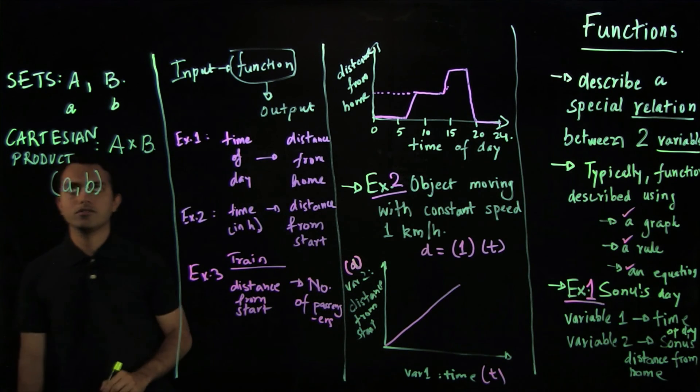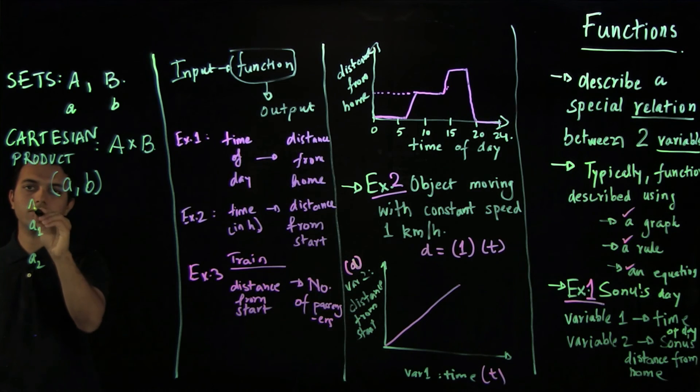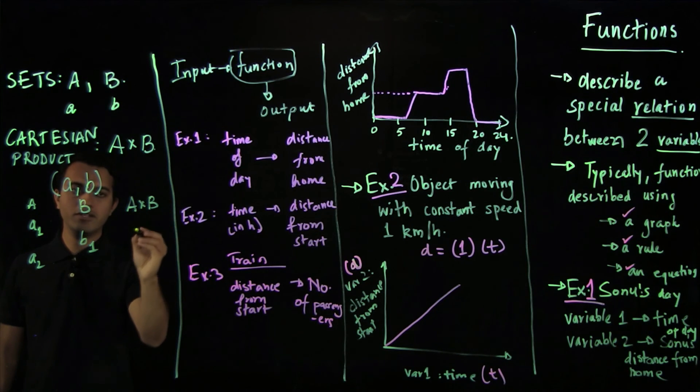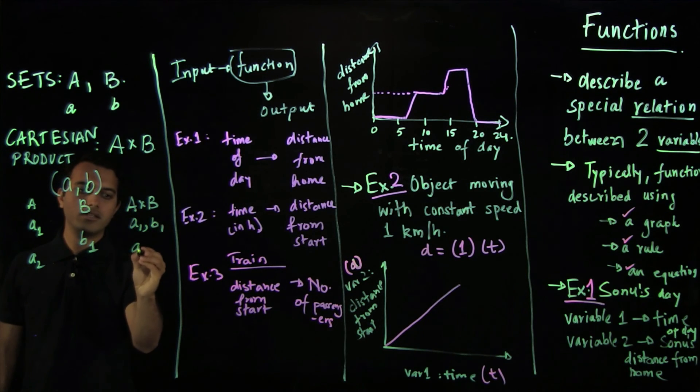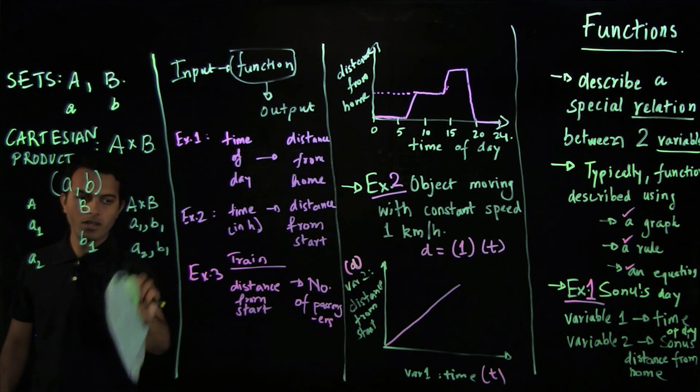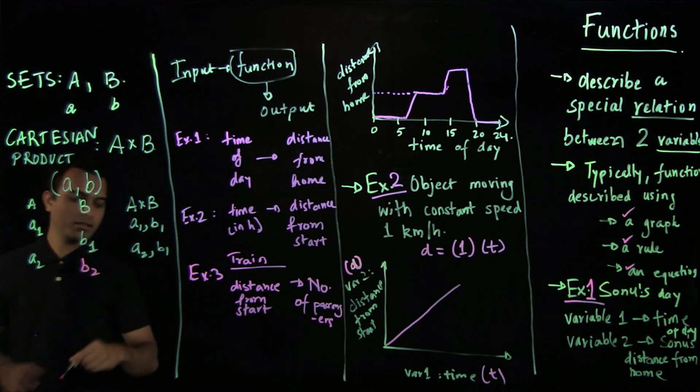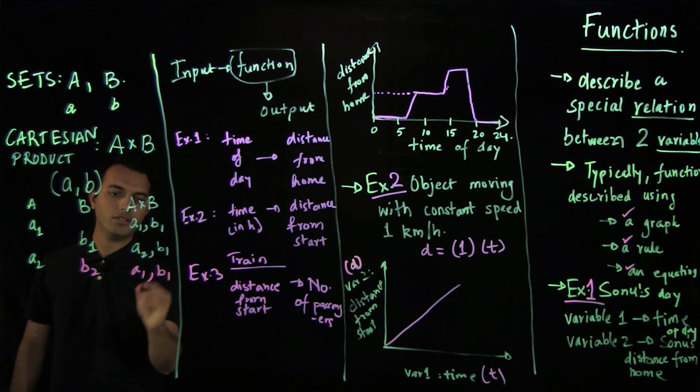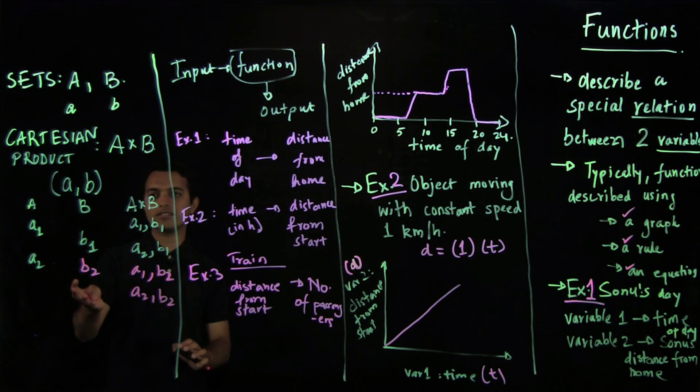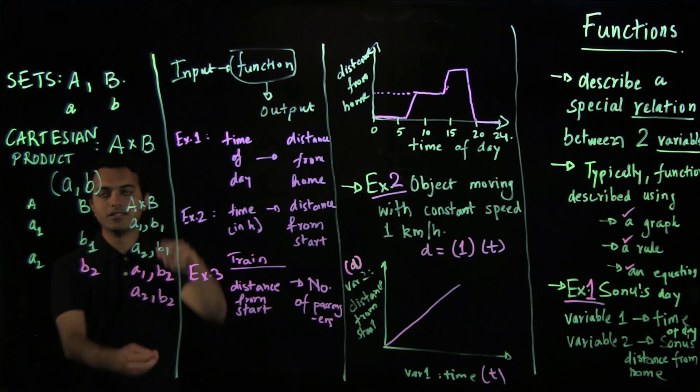Let's say we denote elements of A by small a and elements of B by small b. So once we have this set, we have variables from these sets, and whenever there is any relationship between these variables, we can define them using certain mathematical constructs.